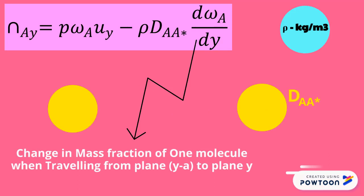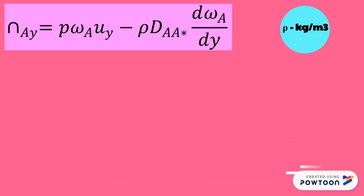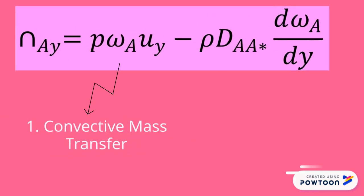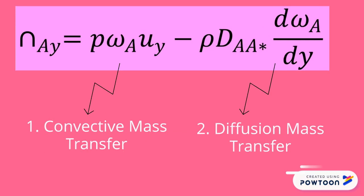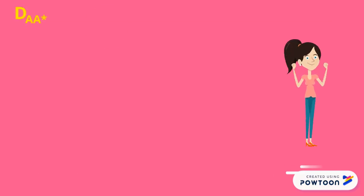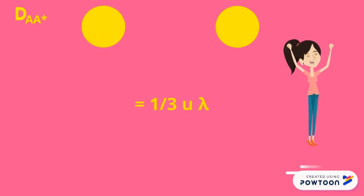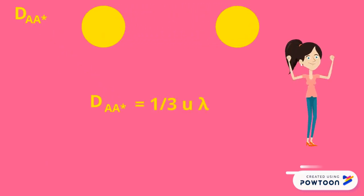Two main modes of mass transport to be considered are: 1. Convective mass transfer, and 2. Diffusion mass transfer. Now we've successfully formulated the expression for self diffusivity given by D_AA* equals (1/3)*U_bar*lambda.